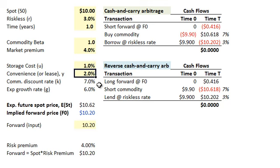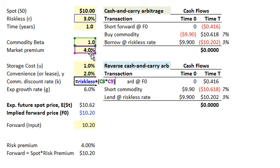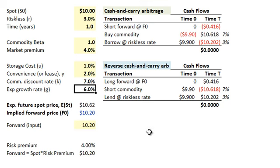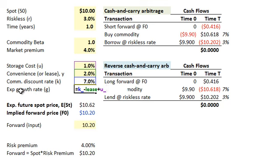These assumptions allow me to compute two things: the commodity discount rate K, which applies the capital asset pricing model — risk-free rate plus beta times the premium — giving a commodity discount rate of 7%. And then an expected growth rate of 6%, which is simply the discount rate minus the lease rate plus the storage cost, since we don't expect the lease and storage — ongoing benefits and costs — to be incorporated in the capital appreciation of the spot price. So G is the growth rate I expect in the spot price going forward in time.